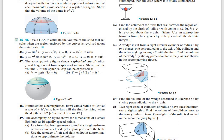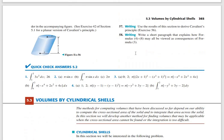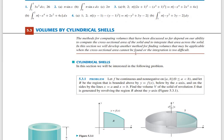The axis will be perpendicular to the strip for the disc and washer method. For the shell method, the axis is parallel to the strip.